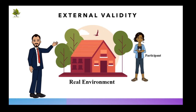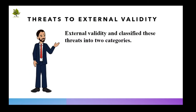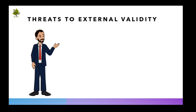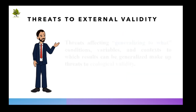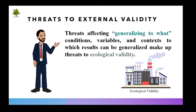Building on the work of Campbell and Stanley, Bracht and Glass refined and expanded the discussion of threats to external validity and classified these threats into two categories: threats affecting generalizing to whom — that is, threats affecting the groups to which research results can be generalized — make up threats to population validity; and threats affecting generalizing to what — that is, threats affecting the settings, conditions, variables, and contexts to which results can be generalized — make up threats to ecological validity.